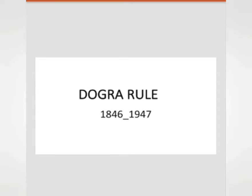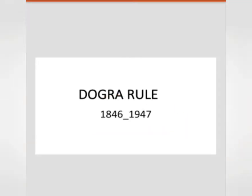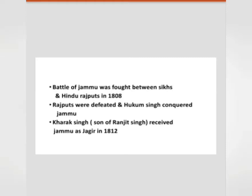In this video we will see how the Dogra rule emerged and for how long it lasted. The Dogra rule started from 1846 up to 1947. In 1947, the instrument of accession was signed by Hari Singh and then it ended.